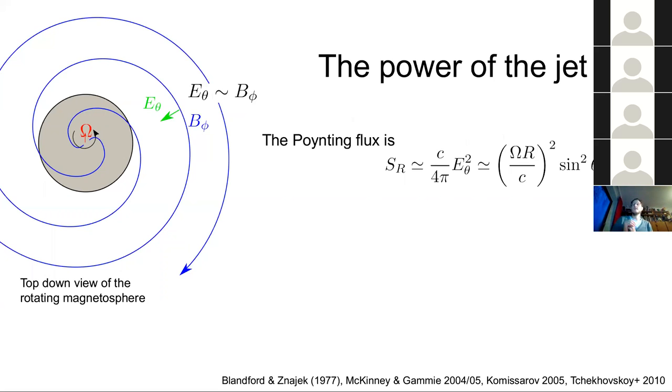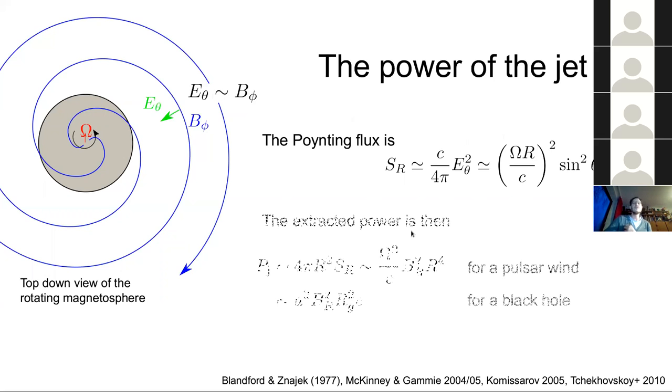So plugging this back into our Poynting flux, we're dealing with E theta squared, which you already know. So that's velocity squared times BR squared, just our V cross B argument. Okay, so what did we get? We know the Poynting flux, we can multiply with some surfaces to get an energy flux out of this. So that's done here.